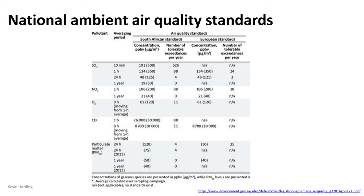European standards are slightly more stringent — they don't allow 10-minute spikes above 134, so the 191 ppb spike limit doesn't apply in Europe. CO spikes are also not allowed in Europe. Please note that legislated values change from year to year, so always verify you have the most current numbers.